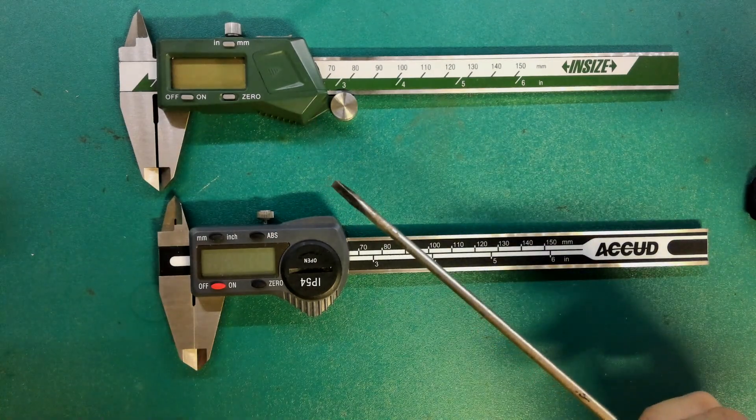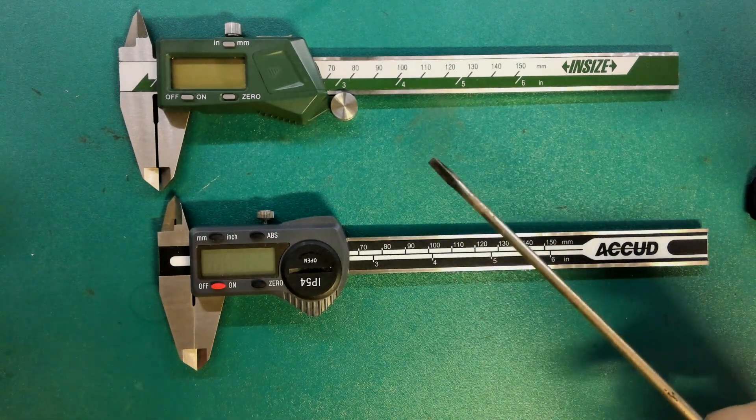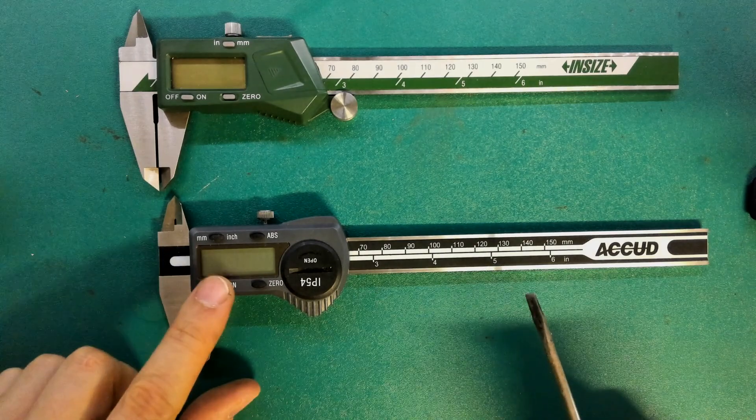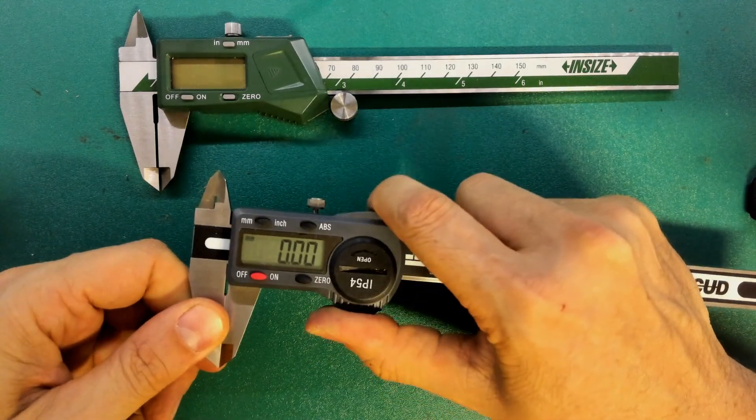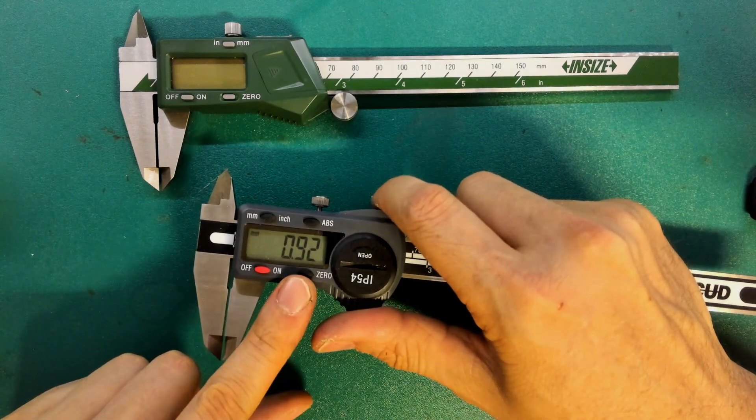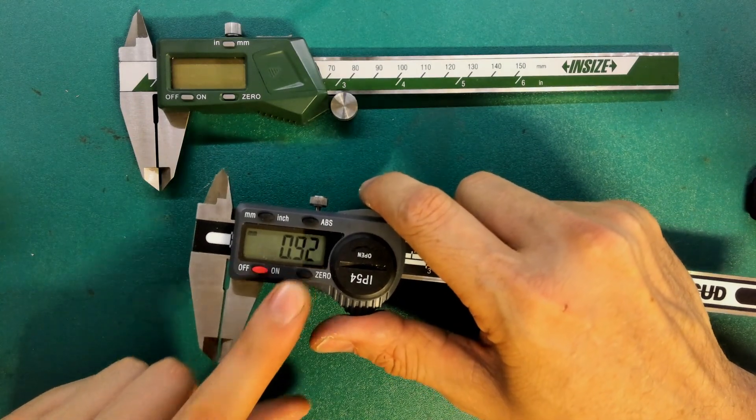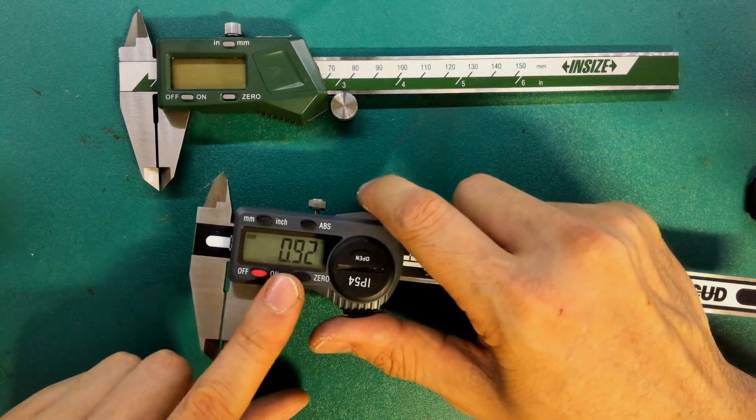Most vernier calipers have some very common similarities. You can turn them on. Sometimes vernier calipers can become slightly uncalibrated and sometimes you might want to measure the distance between two points. So that's what this zero button's for.